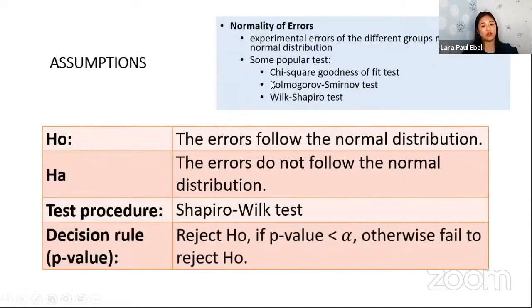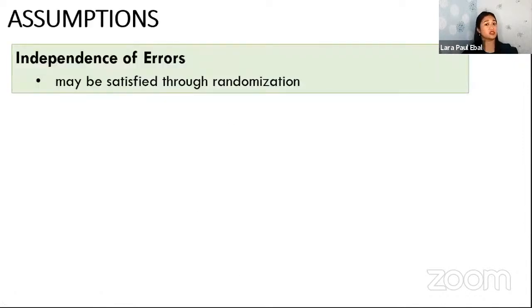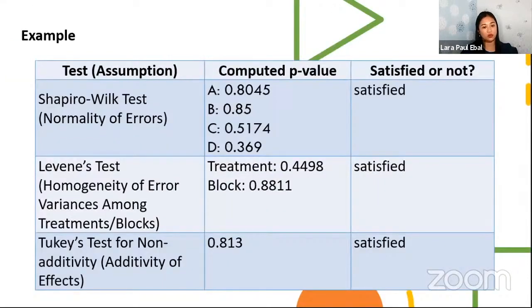The next assumption that we have to consider again is the normality. So you have this H0: follows a normal distribution, HA: does not follow a normal distribution, and then Shapiro-Wilk, then we use the p-value. Assumptions per group - we see that the p-values you can see here, 0.8, 0.85, 0.51, 0.36. All of this are greater than alpha, which is 0.05. Therefore, we have satisfied the assumption of normality. Now, the independence of error, the last assumption, satisfied using randomization. So we have the summary here. So far, lahat naman po ay nasatisfy, so we can proceed with the test.